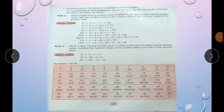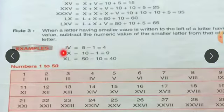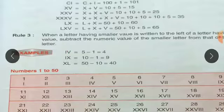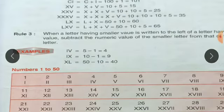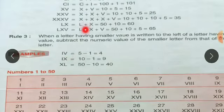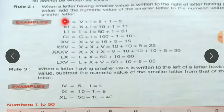Example rule 3: when a letter having a smaller value is written on the left side — here, L is the smaller value. When the left side value is smaller, you have to subtract. So I represents 1, and left side is 1, right side is 5. Since the left side number is less than the right side, you subtract: 5 minus 1.